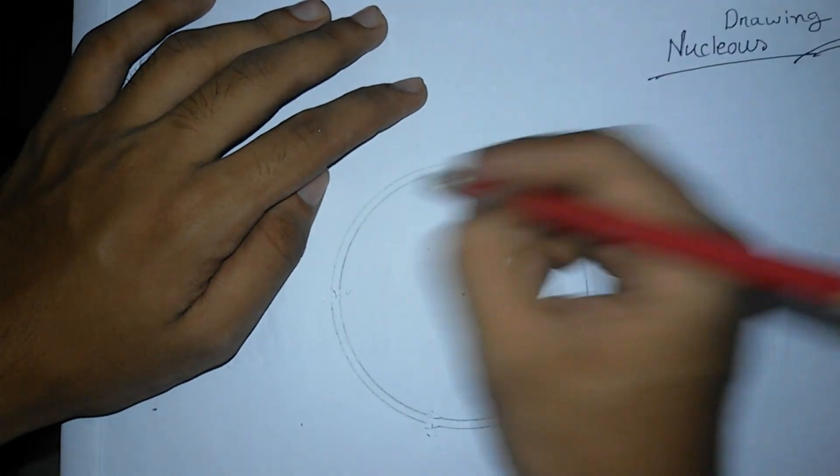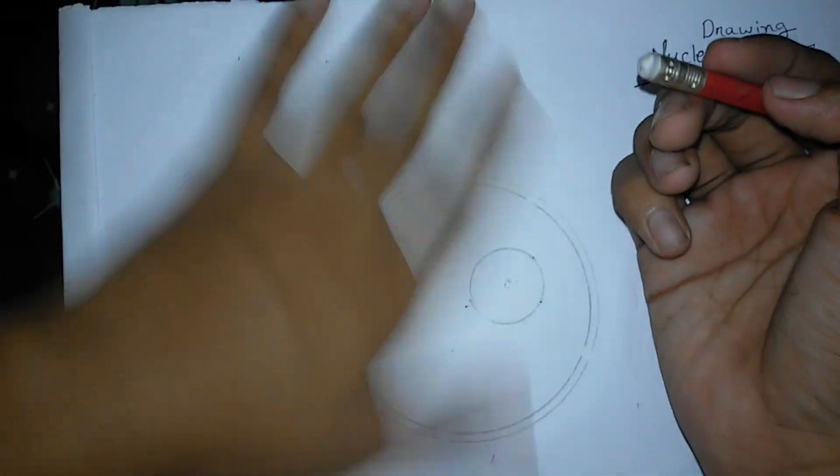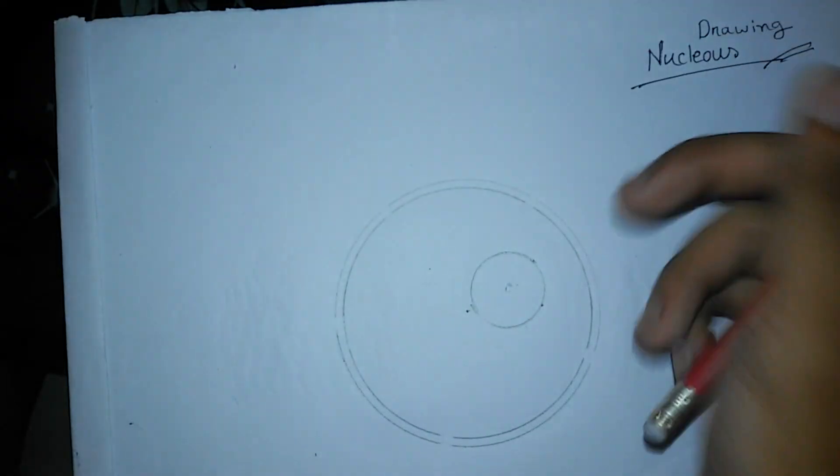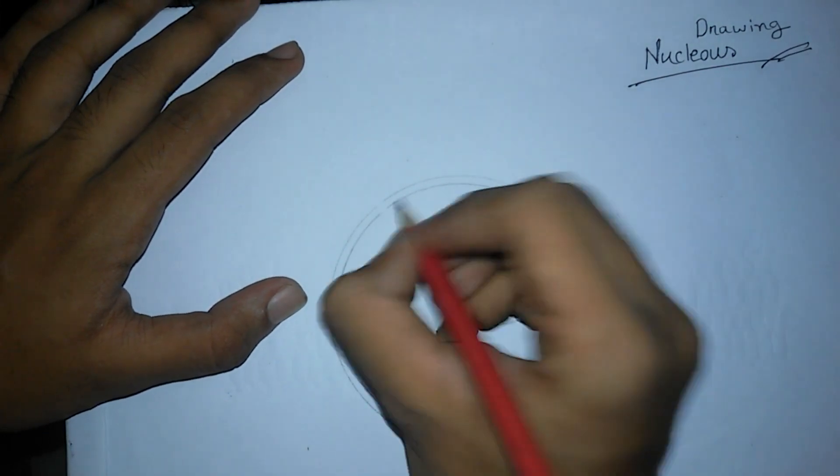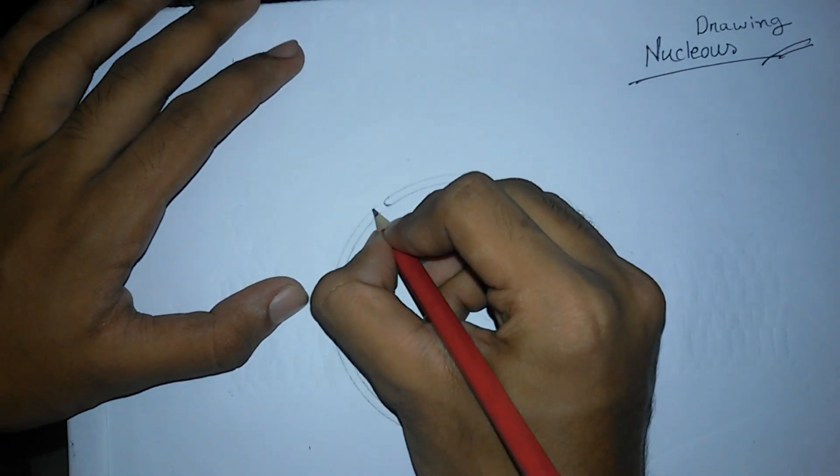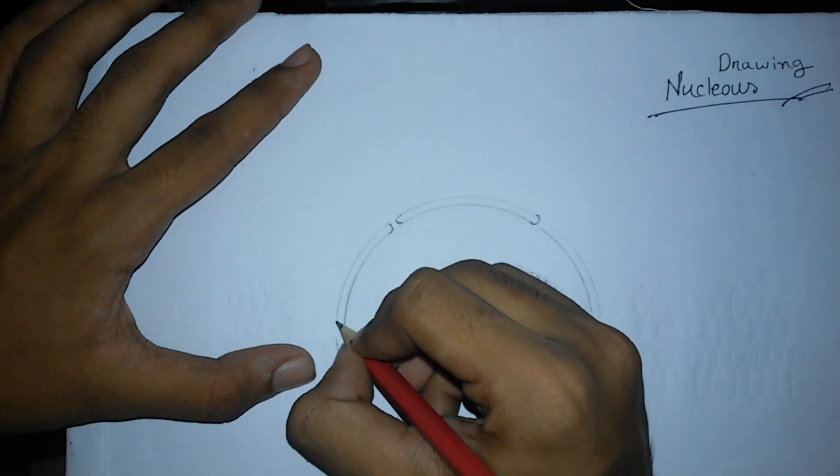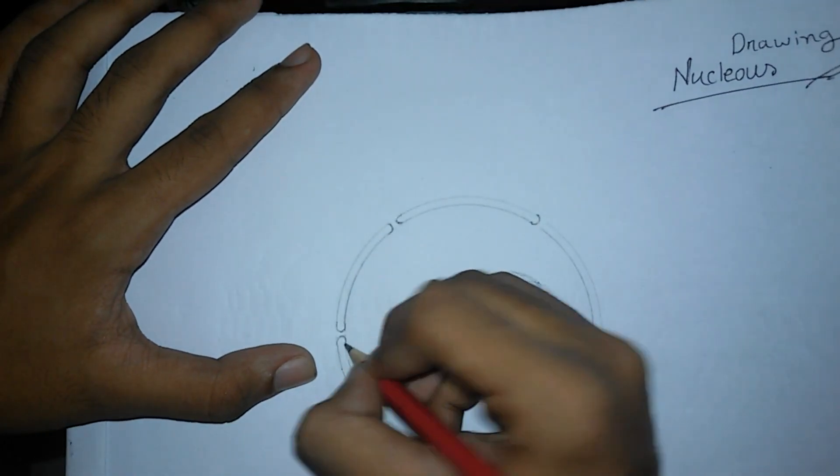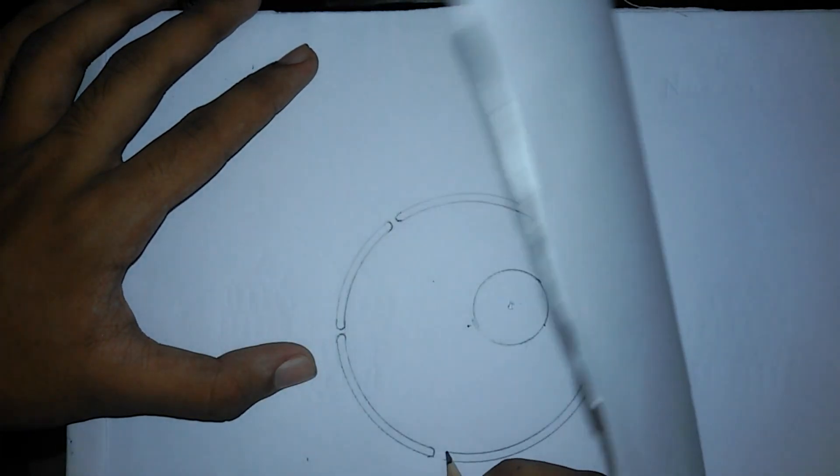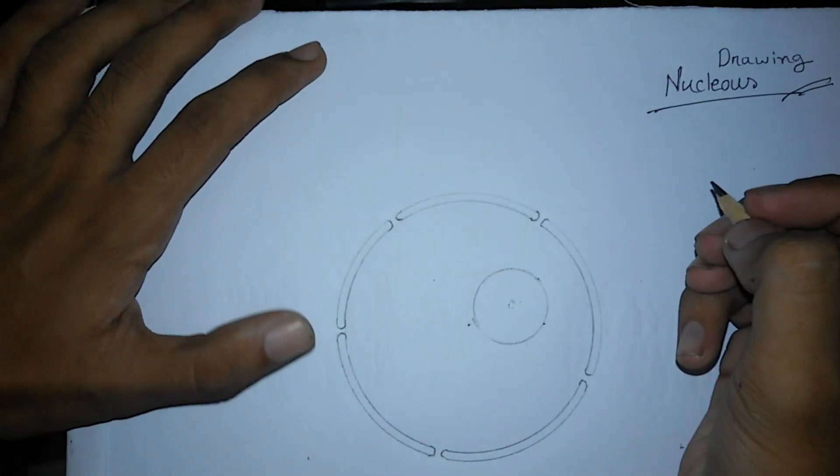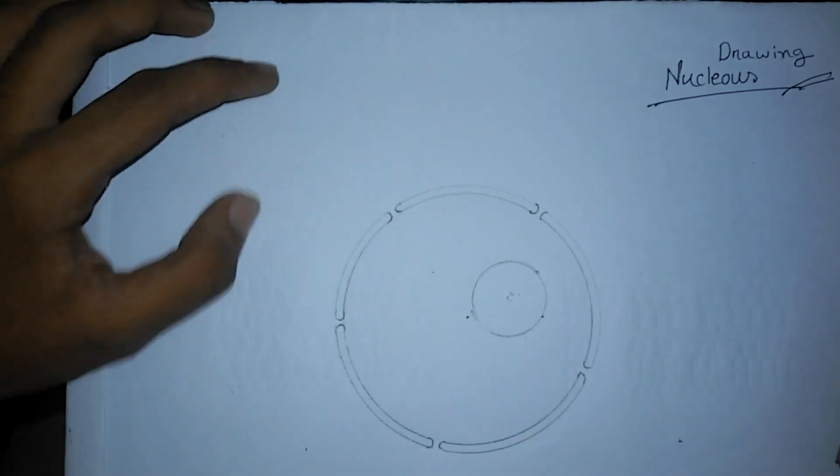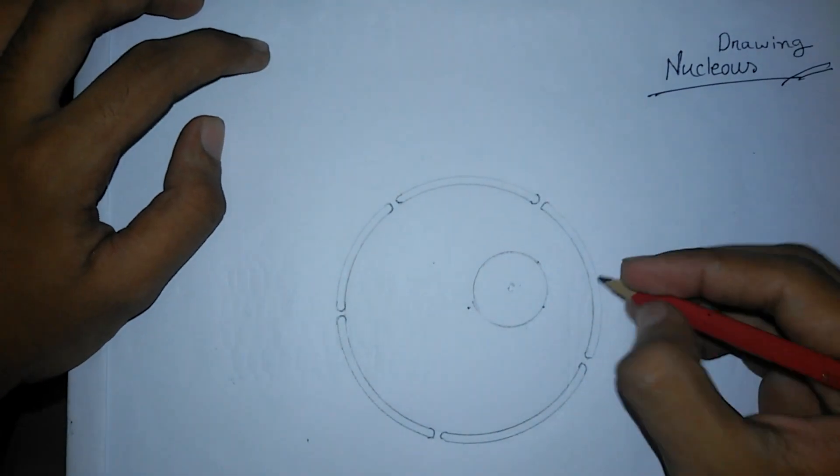I've erased these parts. Then I have to add back whatever I have erased like this. After adding, I have more work to be done. My adding is completed. Now this looks like our nucleus.